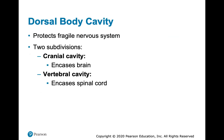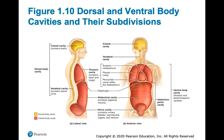The dorsal body cavity has two subdivisions, and its main purpose is to protect your fragile nervous system. We subdivide it into the cranial cavity, which encases the brain, and the vertebral cavity, which encases the spinal cord. The dorsal body cavities are on the back side of the body, while the ventral body cavities are on the anterior side, divided into the thoracic cavity and the abdominal pelvic cavity.